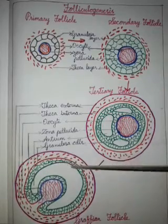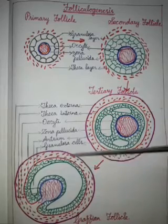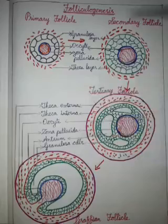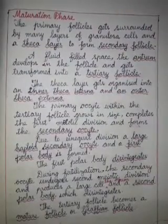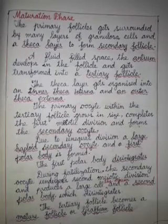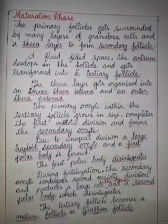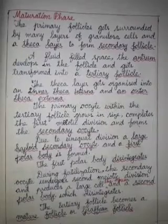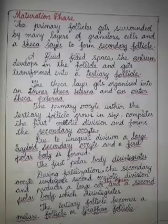The antrum enlarges to form the Graafian follicle, which contains the secondary oocyte. Learn the process of oogenesis and post your answers. In the next video, we will learn the schematic representation of oogenesis and the structure of the ovum. Hope all have understood today's video. Write a home test on this and post your answers. Stay home, stay safe. Thank you, children.